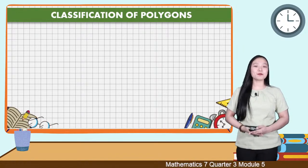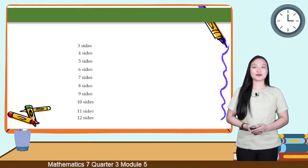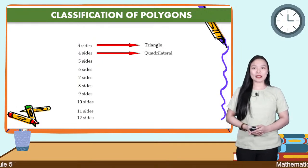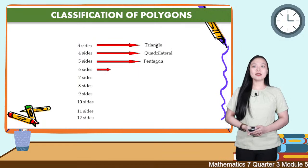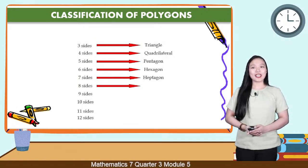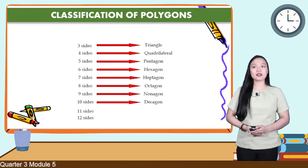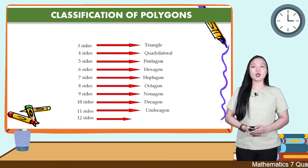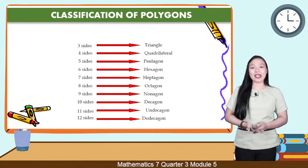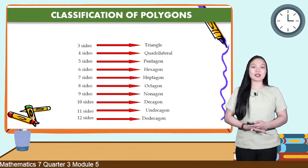Let's talk about classification of polygons. Polygons can be classified according to the number of sides: 3 sides — triangle; 4 sides — quadrilateral; 5 sides — pentagon; 6 sides — hexagon; 7 sides — heptagon; 8 sides — octagon; 9 sides — nonagon; 10 sides — decagon; 11 sides — undecagon; 12 sides — dodecagon. A polygon with more than 13 sides is named as n-gon, where n is the number of sides. For example, a polygon with 13 sides is called a 13-gon.